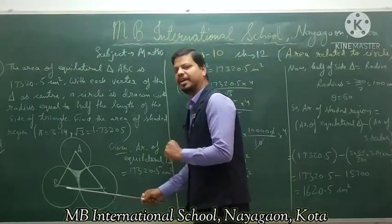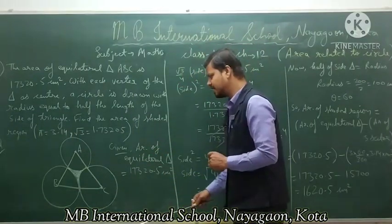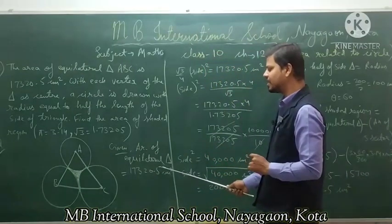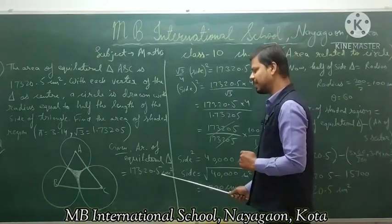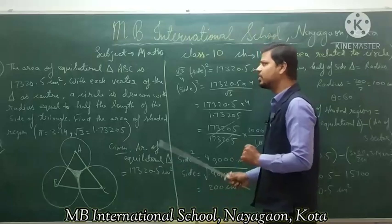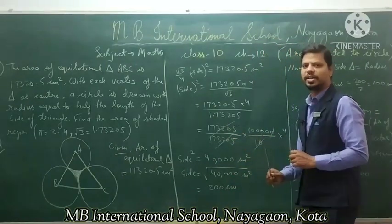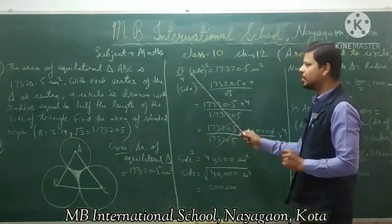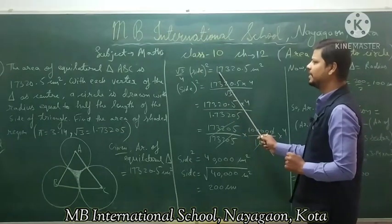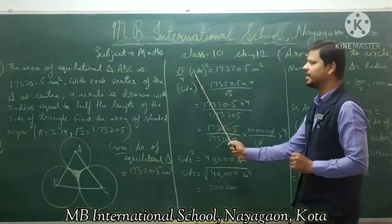First of all, find the radius by using the area of the equilateral triangle. The given area of equilateral triangle is 17320.5 cm square, and the formula is root 3 upon 4 times side squared equals 17320.5 cm square.